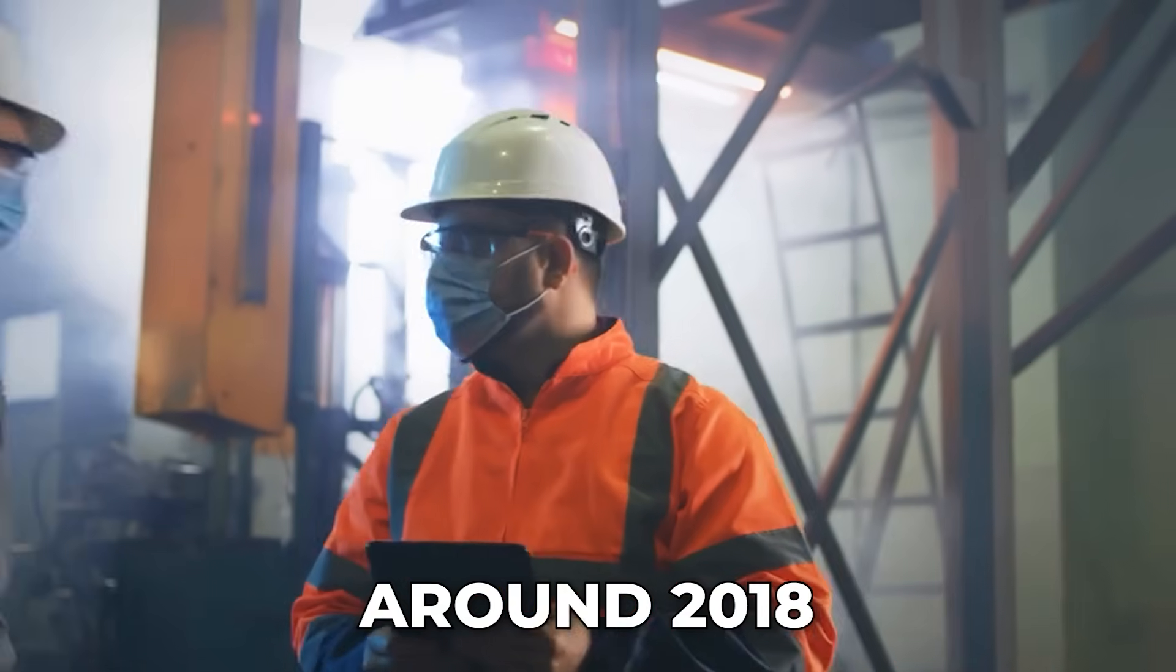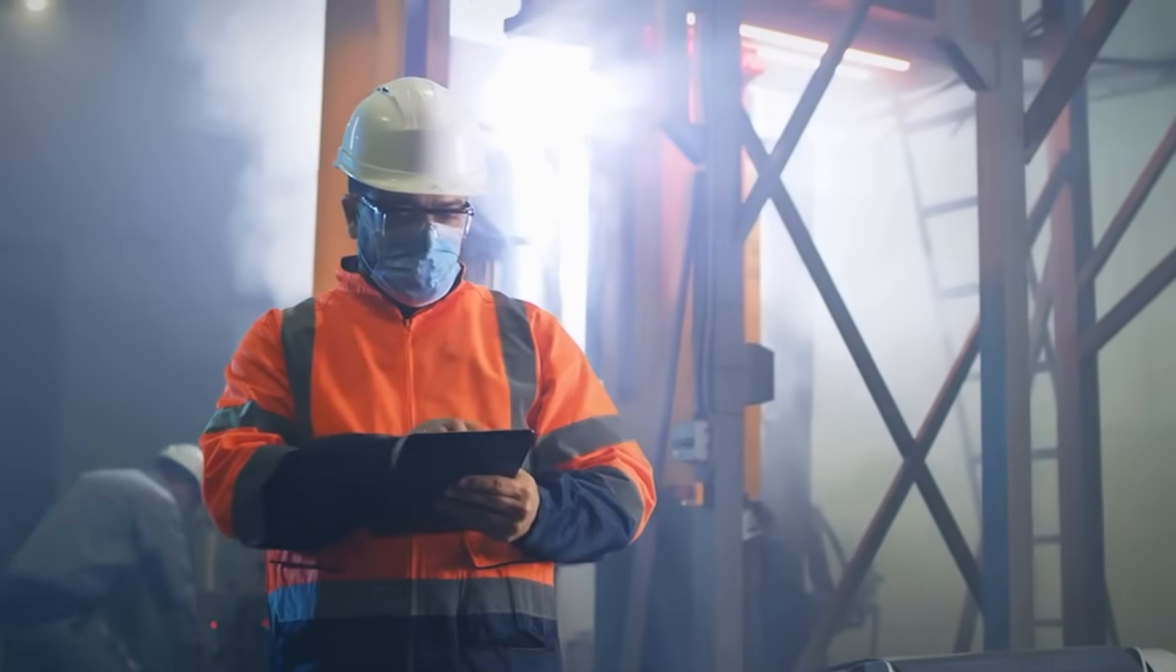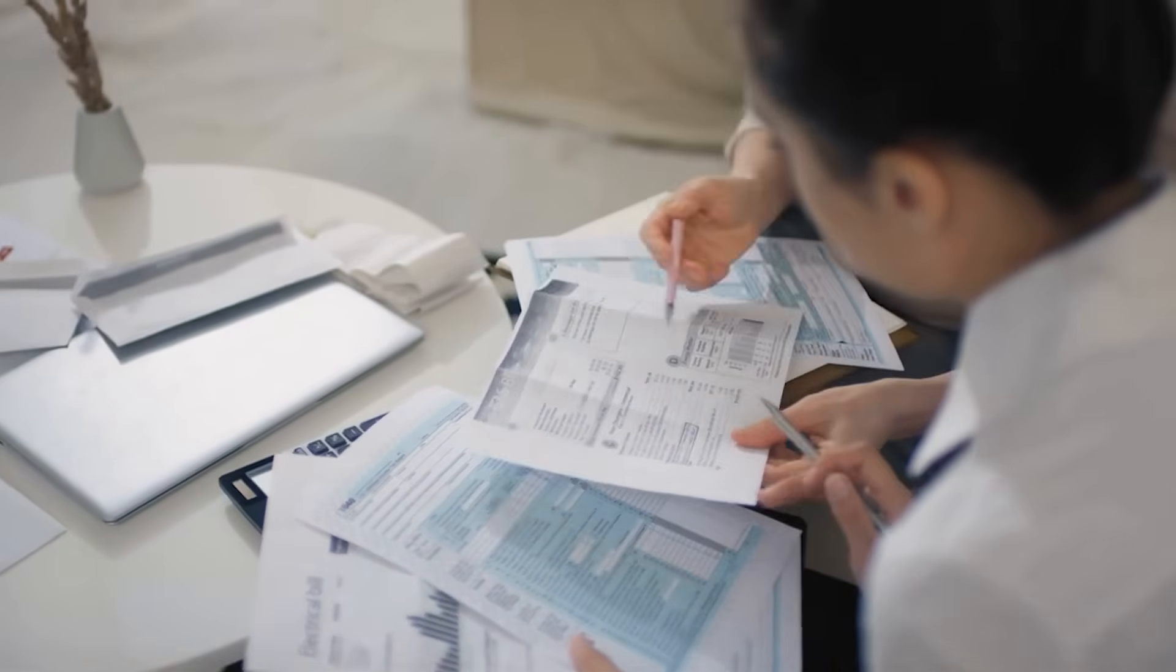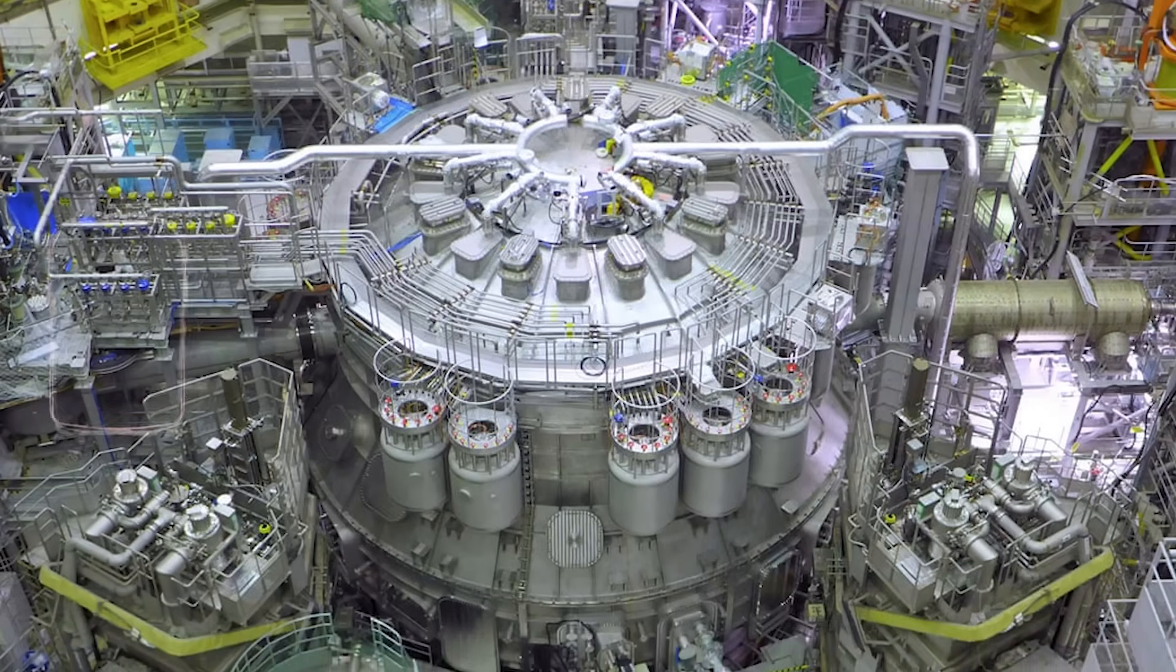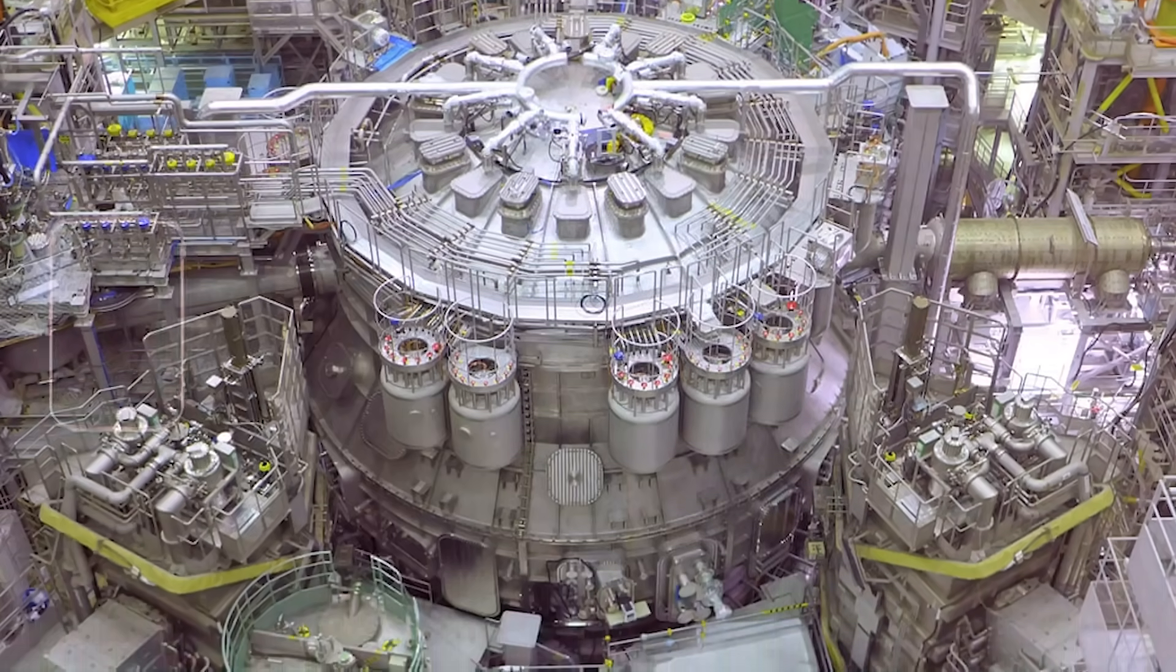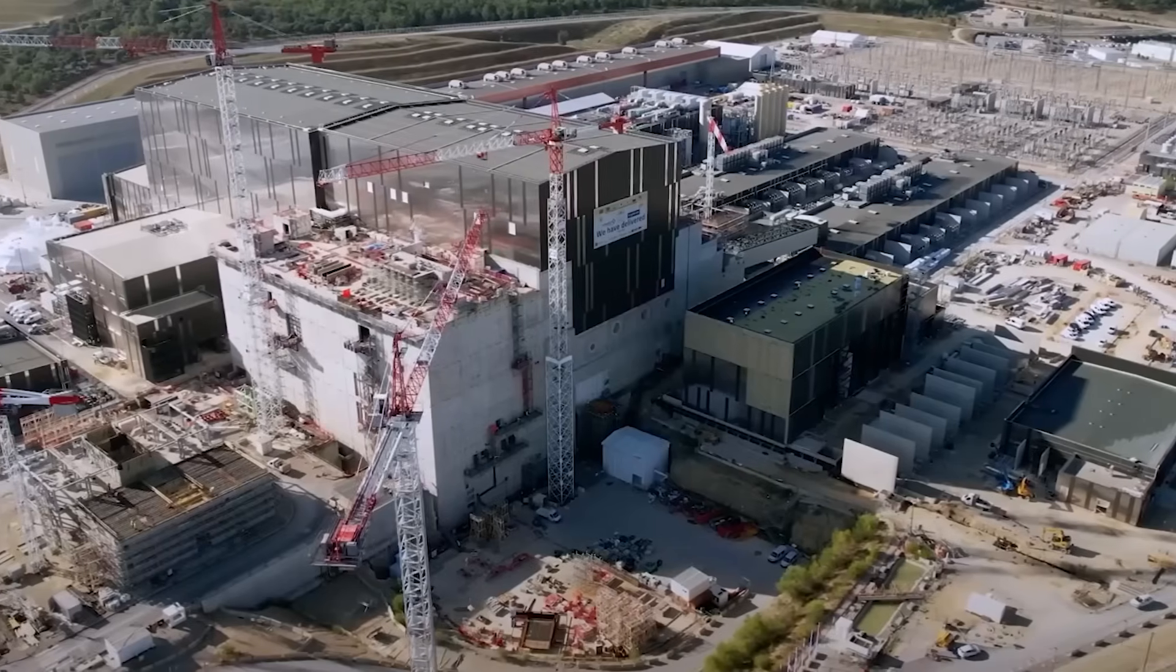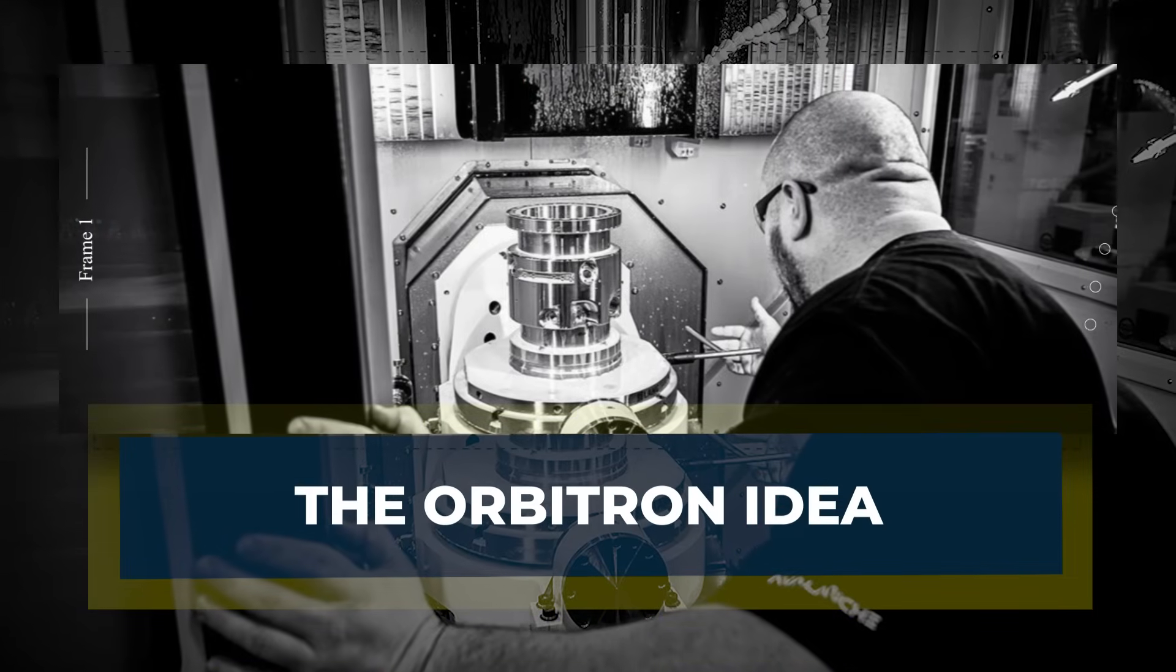Around 2018, one of them told Bryant, I want to do a fusion startup. Bryant wanted in. It meant quitting a stable job and taking a pay cut. At home, the message was practical: get good insurance and please bring home a company hoodie. They looked around and saw that most fusion machines are enormous and that size makes learning slow. Avalanche wanted rapid learning. They wanted a reactor smaller than a Toyota Tundra so they could iterate like a startup, not like a national lab.